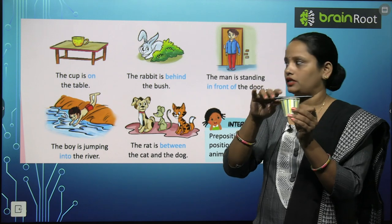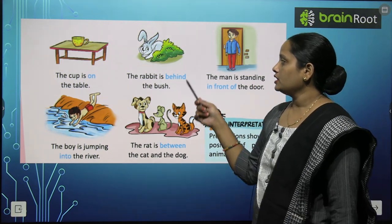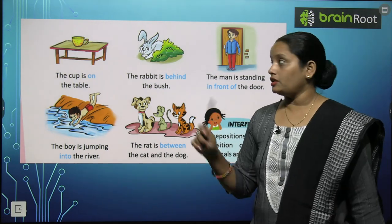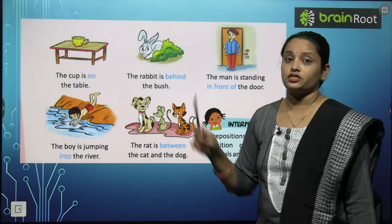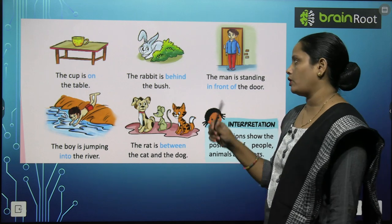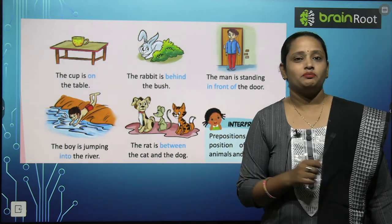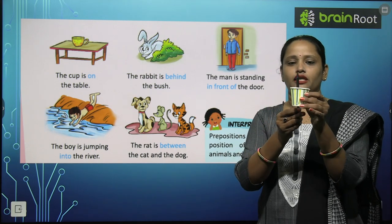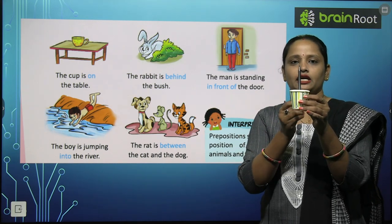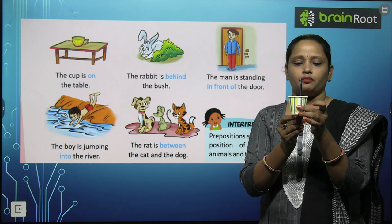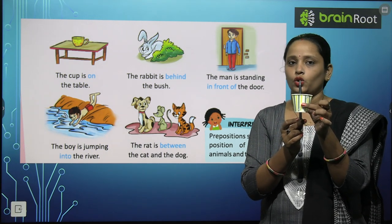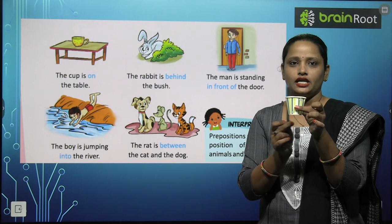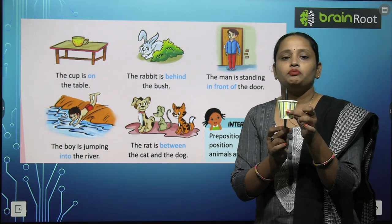Next, the rabbit is behind the bush — rabbit bush, means jhaadi ke pichhe chupa hua hai. Toh 'behind' means pichhe. Similarly this cup and this pen — pen cup ke pichhe hai, behind the cup. Toh 'behind' means kisi bhi object ke pichhe.